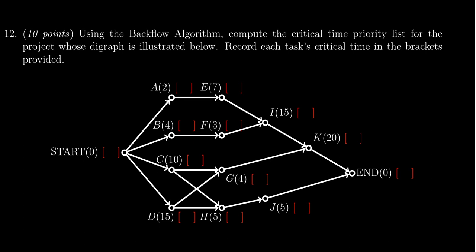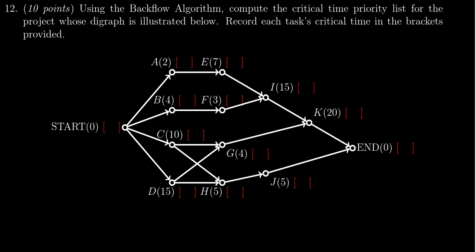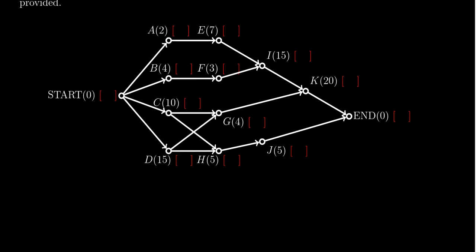I want a little bit more space here so I'm going to write their critical times in each of these boxes. Starting at the very end, the end gets zero. Who are the neighbors of the end? You get K which has 20 plus 0 as its critical time.